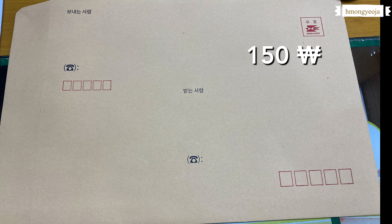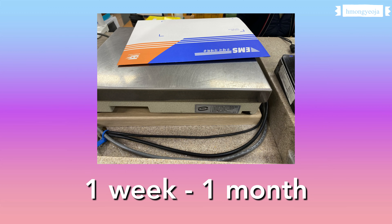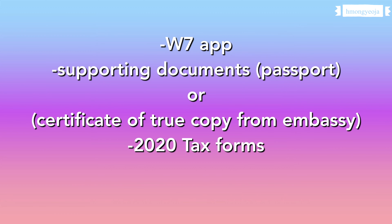The post office has envelopes available — it's really cheap, just about 150 won, and they will add the cost onto your EMS price. After everything is ready, they will put it in an EMS envelope and check the weight. The total envelope and EMS charge was about 25,351 won. The post office lady said my documents may arrive within one week or it could take up to one month to arrive in the USA.